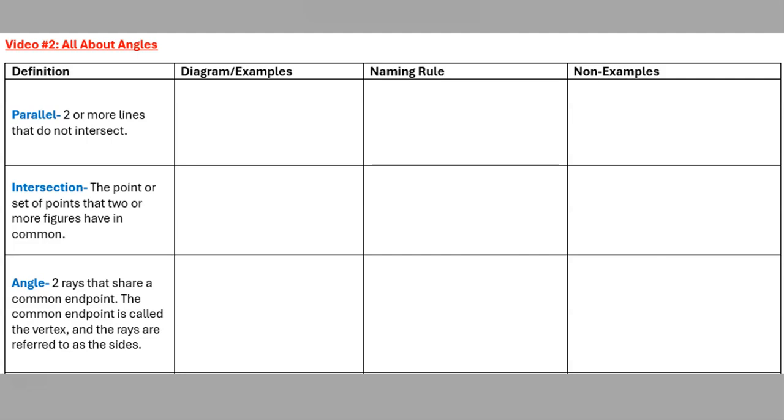We start with parallel, which you've probably heard about, especially in Algebra 1 when you talked about parallel lines on the coordinate plane. In geometry, it's two or more lines that do not intersect. I'm going to draw two points up here on the screen and use that cursive notation I talked about in the first video. So line L in red, line M in blue.